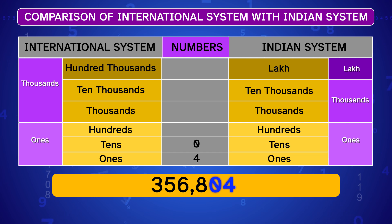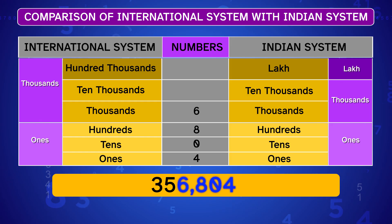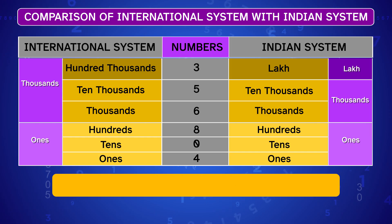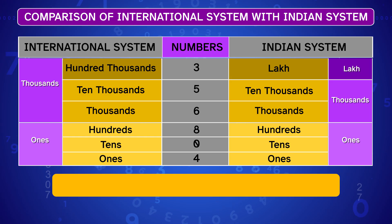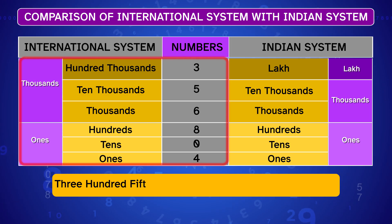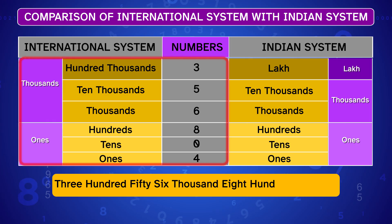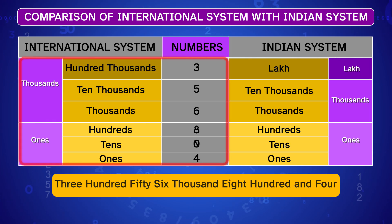Next example: 356,804. The four is in the ones place, the zero is in the tens place, the eight is in the hundreds place, the six is in the thousands place, the five is in the ten thousands place, and the three is in the hundred thousands place in the International System and in the lakhs place in the Indian System.